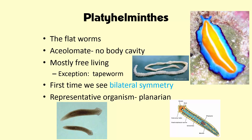Let's dive into our first acoelomate organism that has just one advancement above their relatives the cnidarians. These platyhelminthes is our next phylum. Remember, Porifera were sponges. Cnidarians were either a jellyfish, a coral, or a sea anemone. Those are phylums, and platyhelminthes is also a phylum.